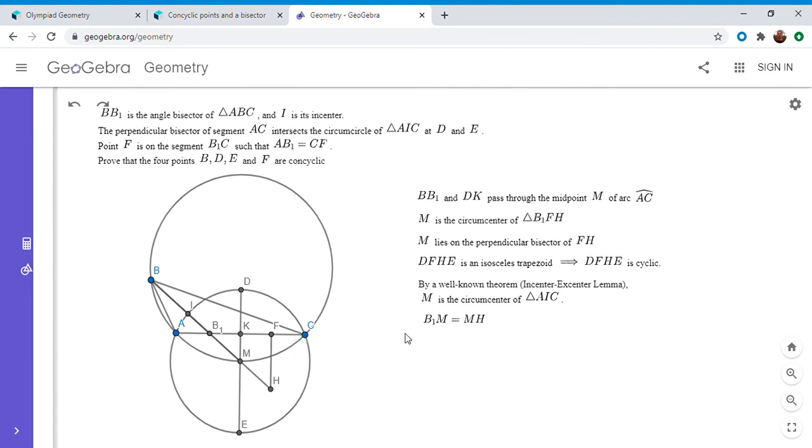So first note that B1M is equal to MH. And that's because M is the midpoint of the hypotenuse of B1FH. Okay. And so that means that if we take BM times MH, it's the same as BM times B1M. So BM times MH is actually BM times B1M. And now I'm going to do a little algebra here. We can take the segment BM and break it up into BB1 plus B1M. Okay. And then distribute it. So we get BB1 times B1M plus B1M squared.